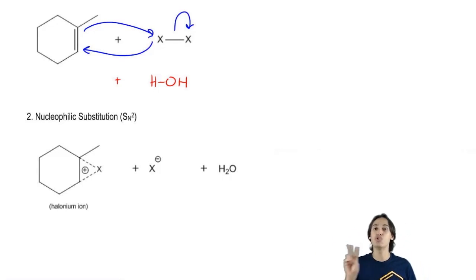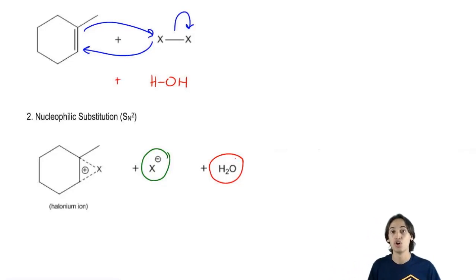So basically, I've got two nucleophiles. I've got X negative just like before when we were talking about halogenation. Nothing has changed. But now what I also have is I've got some water lying around. Now of these two different species, which of them do you think is going to be the stronger nucleophile, the X negative or the water?